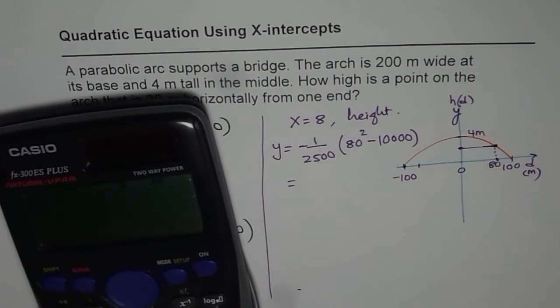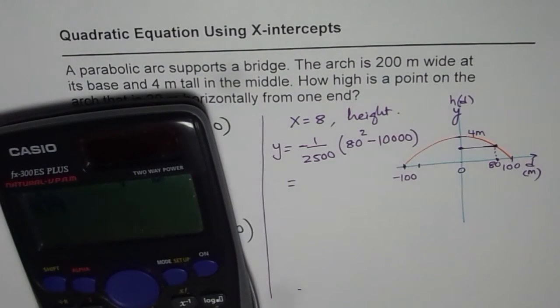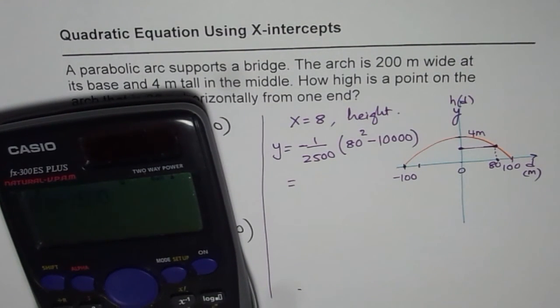So we have 80 squared minus 10,000, which is minus 3600. So that we are going to divide by 2500, that is minus 36 over 25.